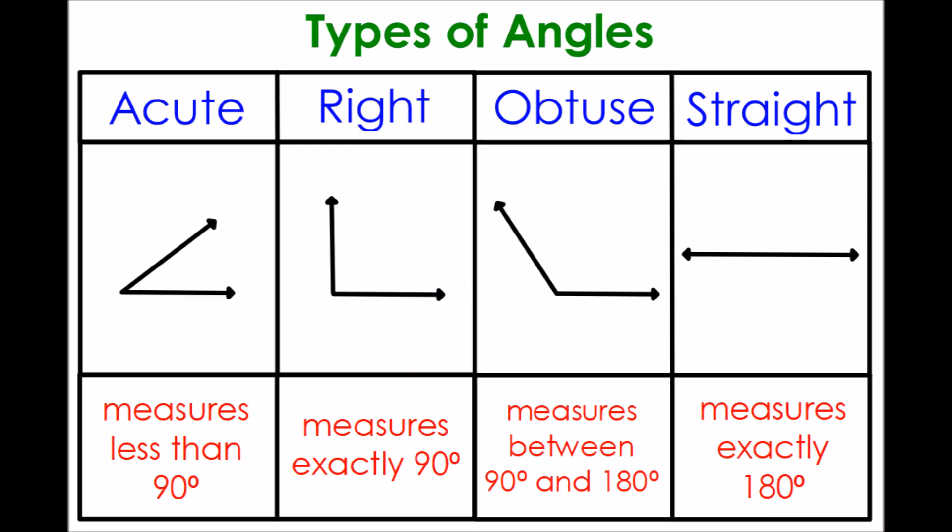Another area of geometry deals with angles. Acute angles measure less than 90 degrees. Right angles measure exactly 90 degrees. Obtuse angles measure between 90 degrees and 180 degrees. And straight angles measure exactly 180 degrees — they look like lines. How you measure an angle is by how open it is.